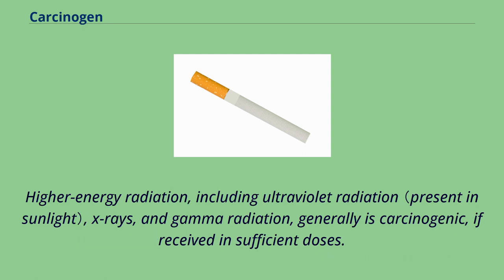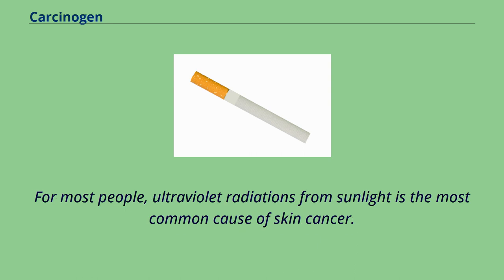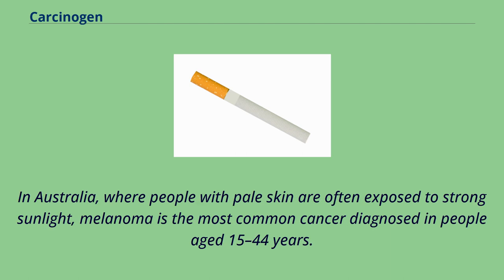Higher energy radiation, including ultraviolet radiation, x-rays, and gamma radiation, generally is carcinogenic if received in sufficient doses. For most people, ultraviolet radiation from sunlight is the most common cause of skin cancer. In Australia, where people with pale skin are often exposed to strong sunlight, melanoma is the most common cancer diagnosed in people aged 15 to 44 years.